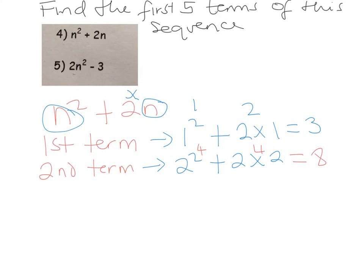So the third term, we're going to replace n with 3. So it's going to be 3 squared plus 2 times by 3. So 3 squared is 9, and 2 times 3 is 6. So 9 add 6 is 15.